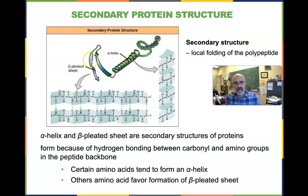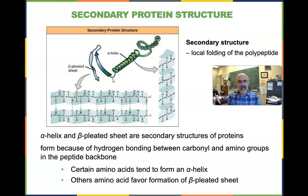In other places, the chain of amino acids crumples up into what we call a beta pleated sheet. When you see a given protein structure and see these little motifs, those are your secondary structures.